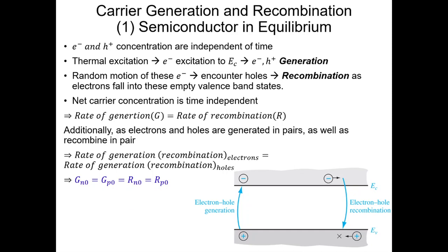In equilibrium conditions, the electron and hole concentrations are independent of time. If there is a thermal excitation, electrons are excited to the conduction band, leaving a hole behind — electron-hole pair generation. These electrons then randomly move in the conduction band and, once in a while, encounter hole sites where they lose their energy and recombine with the holes. This is recombination — the electron falls from the conduction band into empty valence band states.